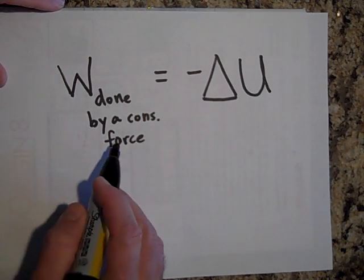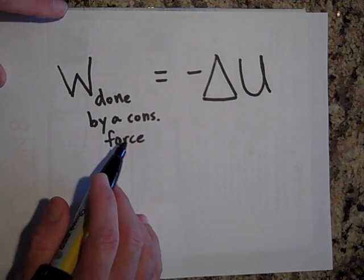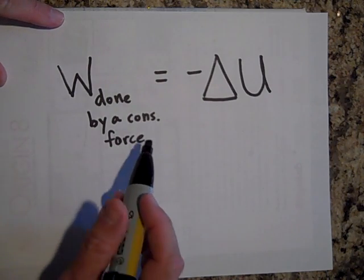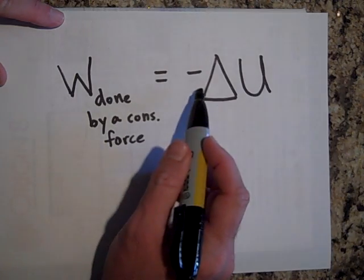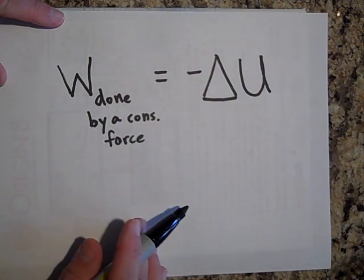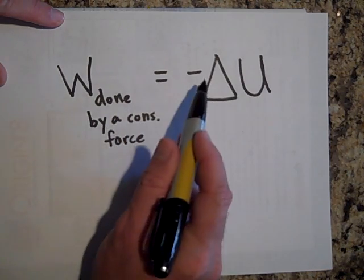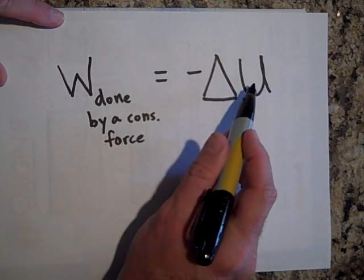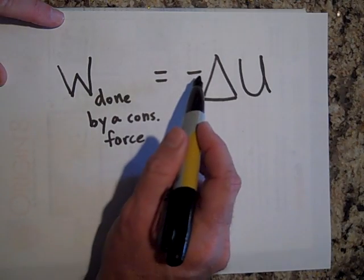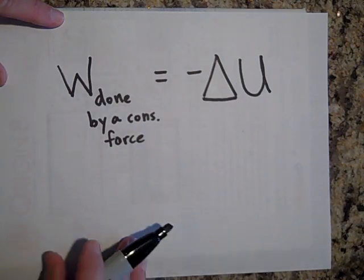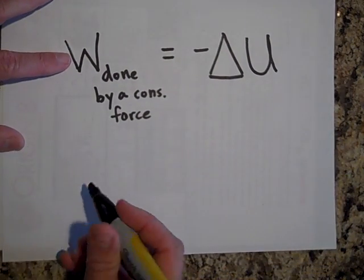This is actually going to be a very important equation for the rest of the year. It says that the work done by a conservative force is equal to the negative change in potential energy. So whenever a conservative force does work, you get a change in potential energy, and the work done equals the negative change in potential energy.